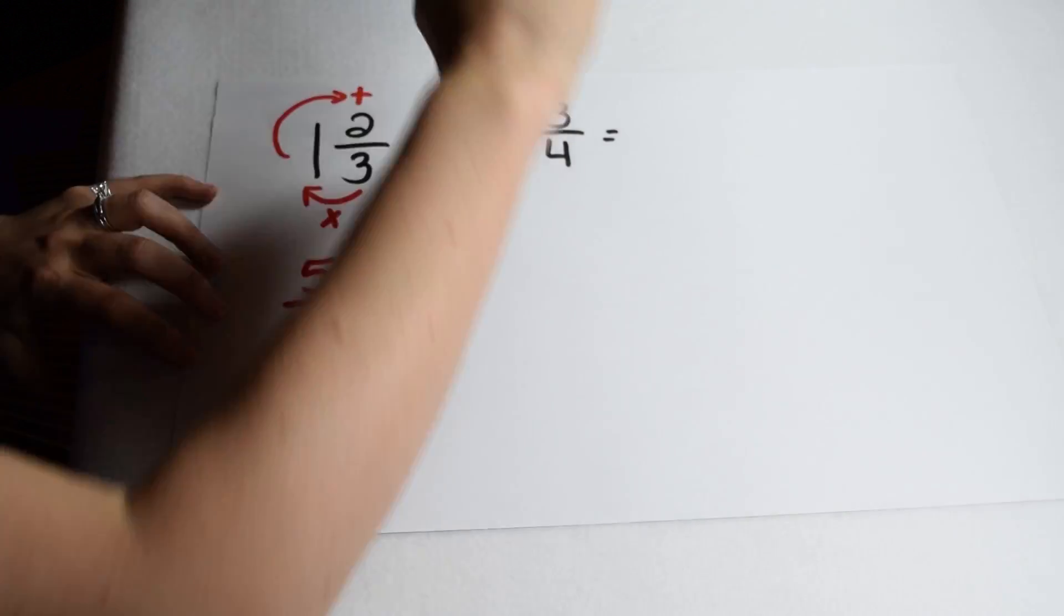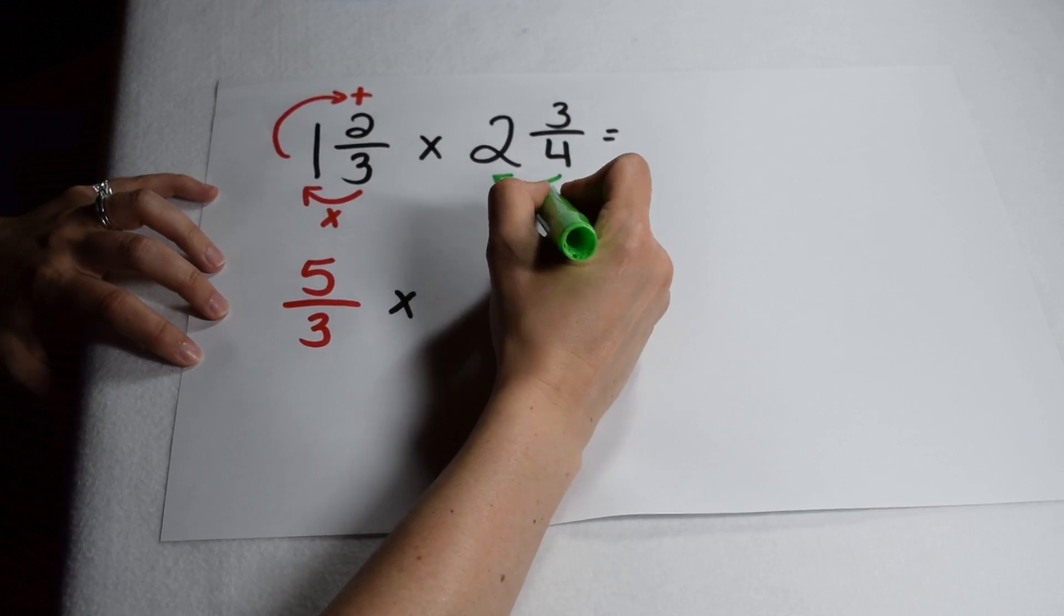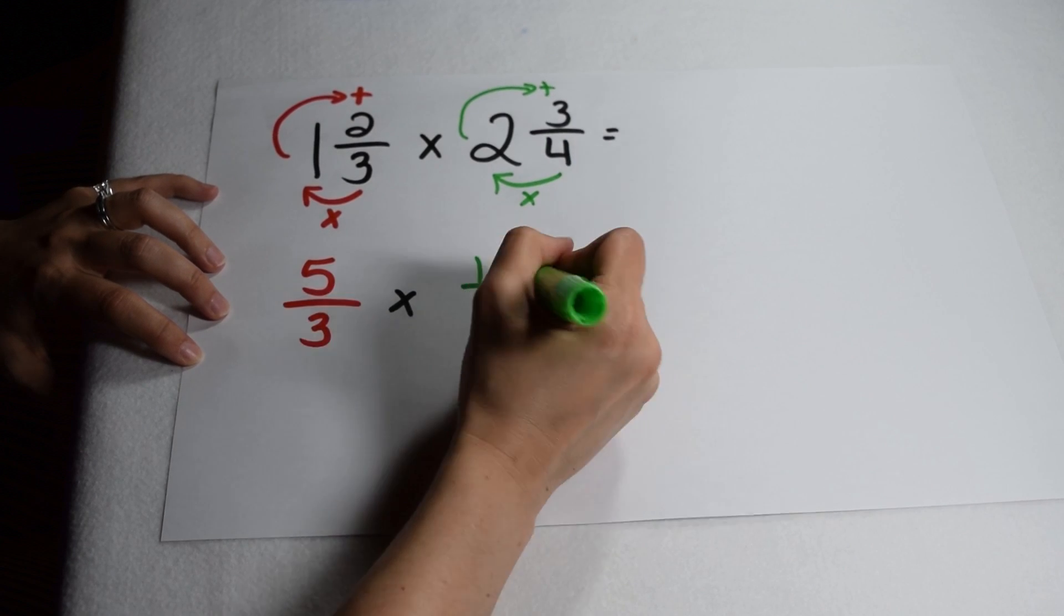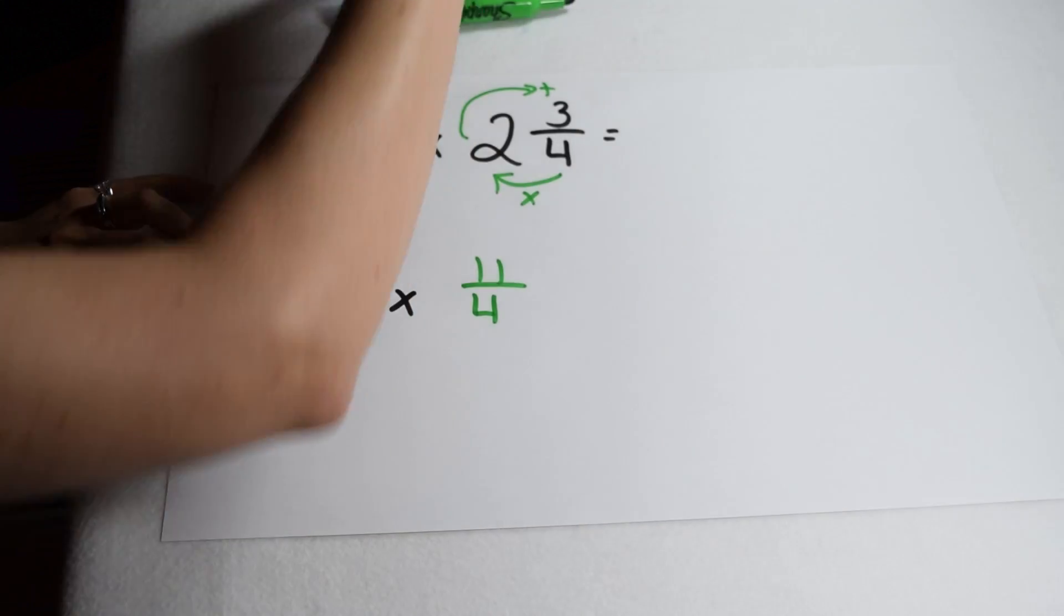We can then do the same thing to our other fraction. I can multiply four times two together to give me eight, and then add those eight pieces to the three I already have to give me a total of eleven, and my denominator of four stays the same.